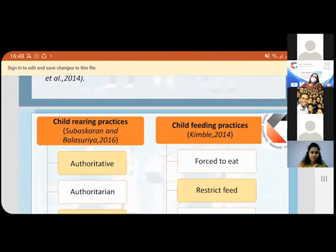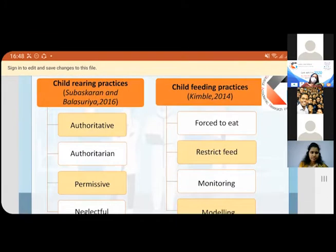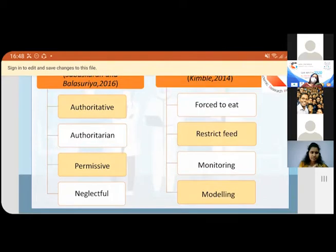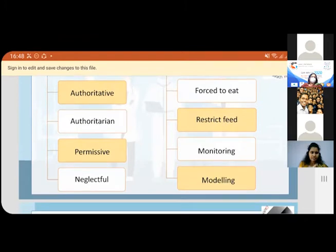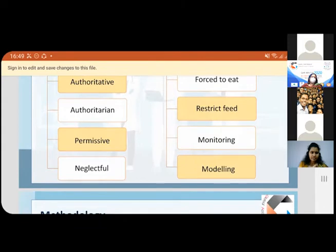I found two classifications of parenting style and feeding practices. According to Subaskaran and Balasuriya, there are four types of child-rearing practices. First is authoritative, where parents encourage their children's autonomy, expect them to be self-regulated, provide love, care, and warmth, and encourage open communication. In authoritarian parenting, they practice rejection and punishments, are highly demanding, use forceful psychological control, and expect their children to obey roles and regulations without any explanations.